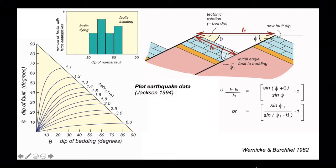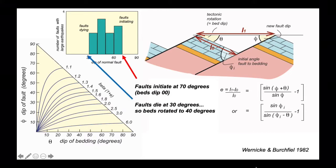So let's plot the earthquake data that we looked at earlier and assume that faults initiate at 70 degrees, in which case the bedding will be zero, it has yet to rotate. And then finally, the faults die at 30 degrees, so the bedding has rotated to 40 degrees. What does that imply about the amount of stretching that these faults have accommodated?